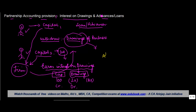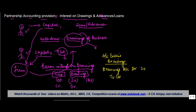The accounting entry for drawings: you debit the drawings account — let's say by 20. When you withdraw, you either take out cash or a cheque. These are asset accounts; when you pay the partner, the asset account gets reduced. The rule is: if it gets reduced, you credit it. So you credit cash or bank by an equivalent amount.